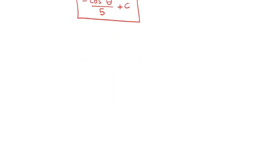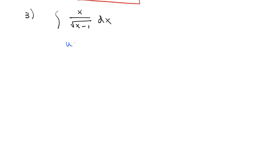Let's do one more that has a very interesting nuance: the integral of x divided by the square root of (x − 1) dx. We can identify u as the inside function x − 1, so du is just 1 dx, meaning dx is our du. But we have a problem: there is an x left over. We need to go all the way to u's — we can't go halfway.